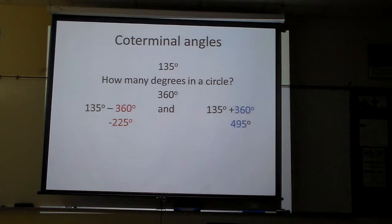If I take 135 minus 360, I get negative 225. If I take 360 and add it to 135, I get 495. So therefore, I have negative 225 and 495.